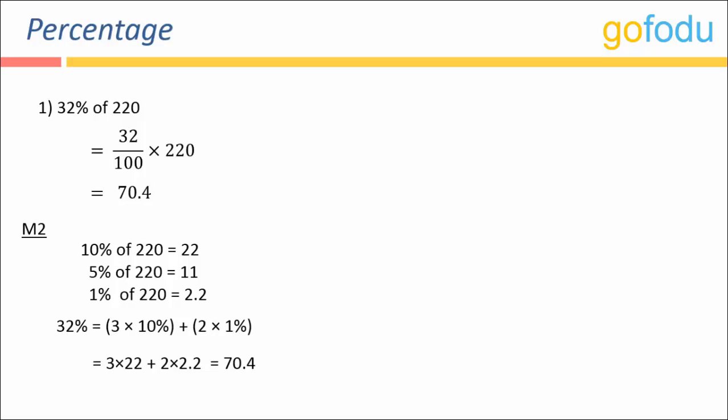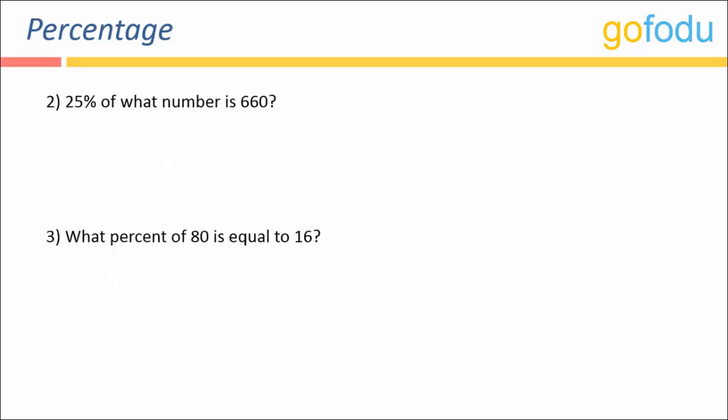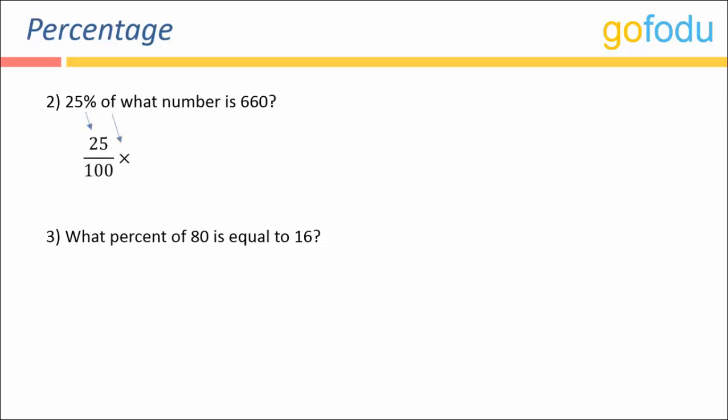Next: twenty-five percent of what number is six sixty? Breaking this into parts: twenty-five percent means twenty-five divided by hundred, 'of' means multiplication, and I don't know the number so I assume it to be X. This equals six sixty. Solving: X equals six sixty into four, that is two thousand six hundred and forty.